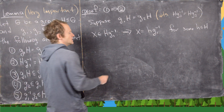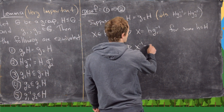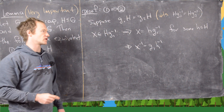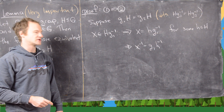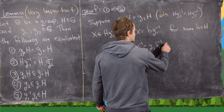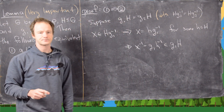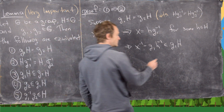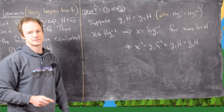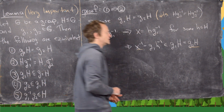Now notice that x⁻¹ equals g1 times h⁻¹ by the shoes-and-socks theorem — we reverse the order and take inverses, using the fact that the inverse of an inverse is itself. But h⁻¹ is in H, so x⁻¹ is in the coset g1H. By our assumption, g1H is the same thing as g2H. So we've got x⁻¹ is in the coset g2H.